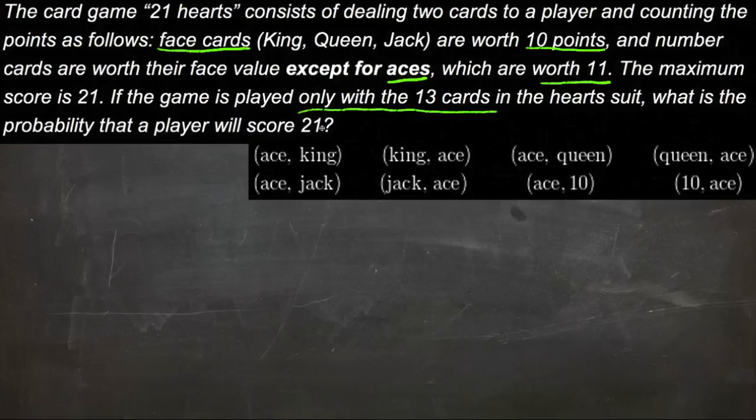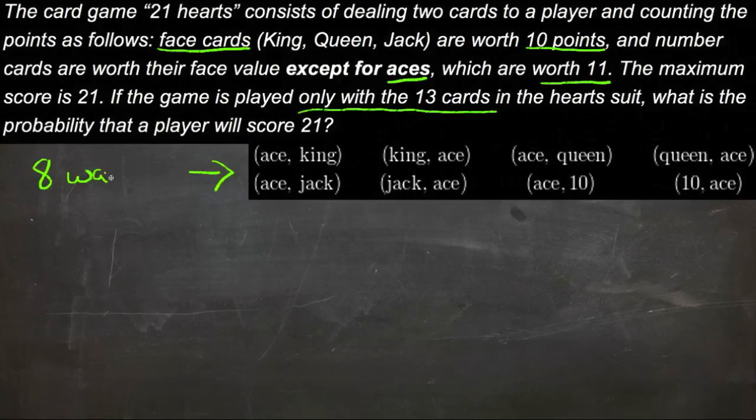Well, 21 points only comes from a face card and an 11, or a 10 and an 11. So a face card and an ace, or a 10 and an ace, and those possibilities are right here. There's a total of 8 ways to get 21.